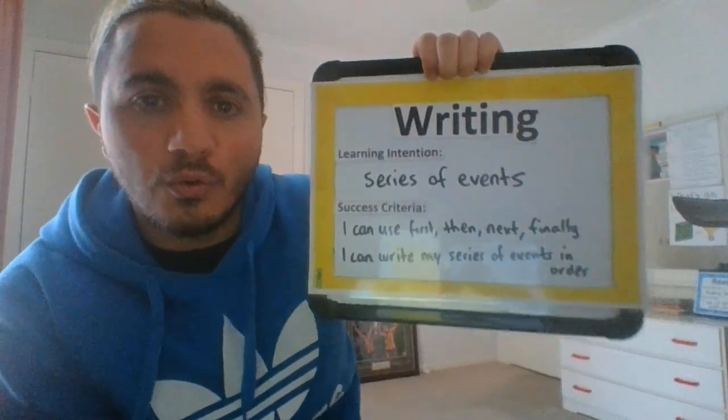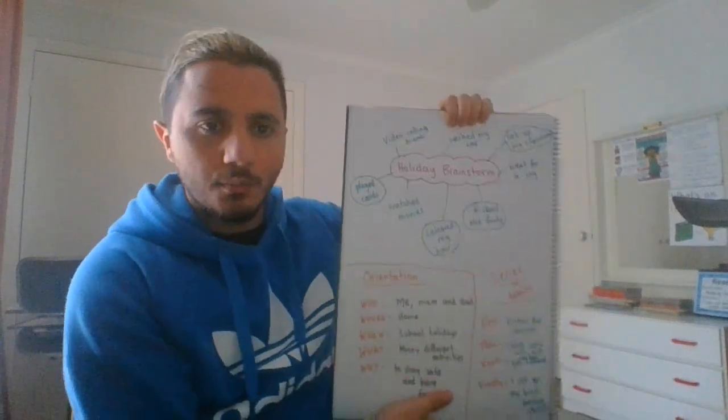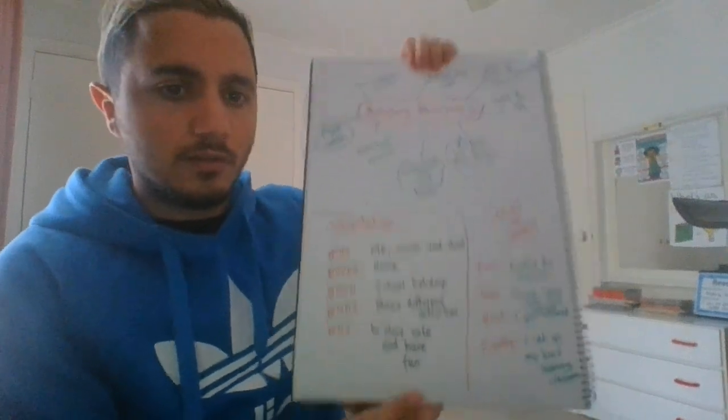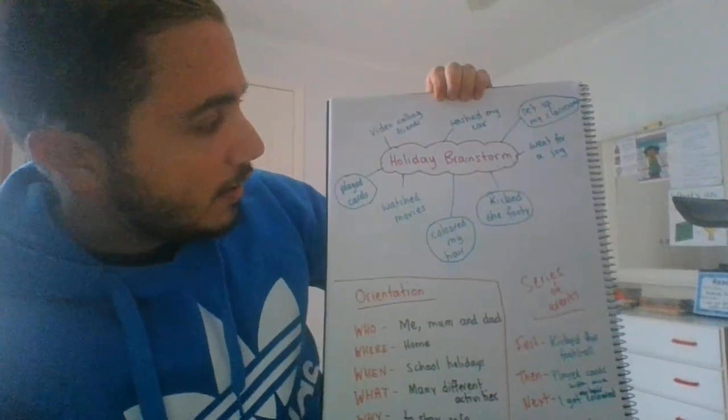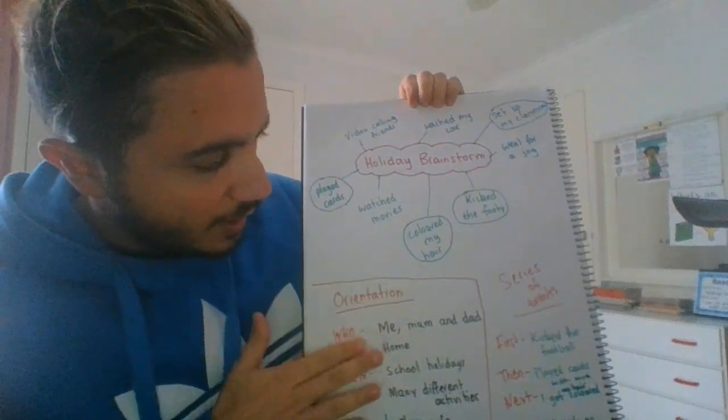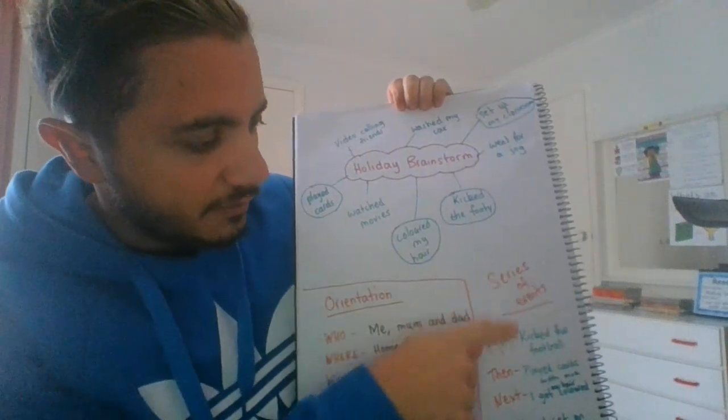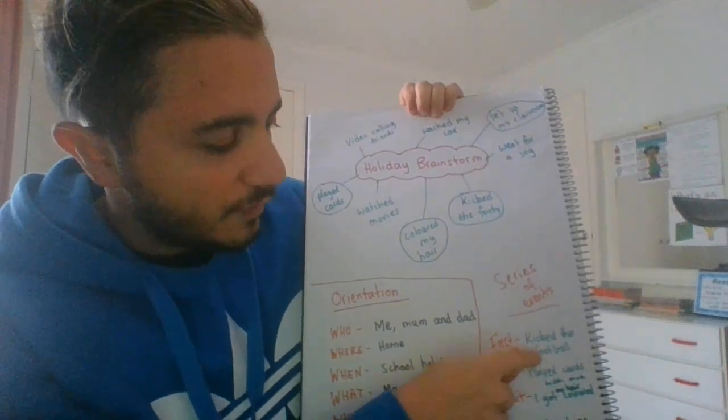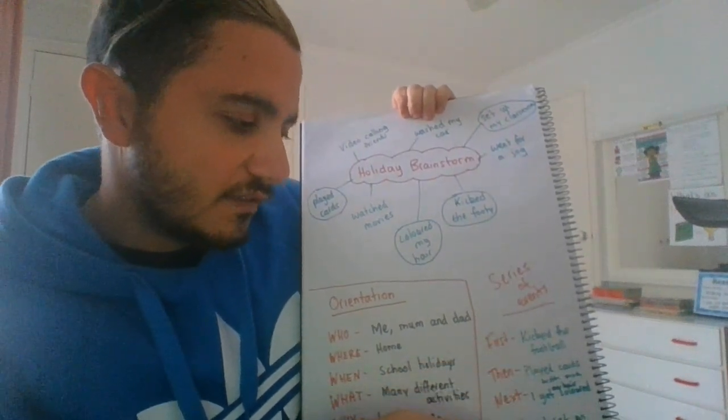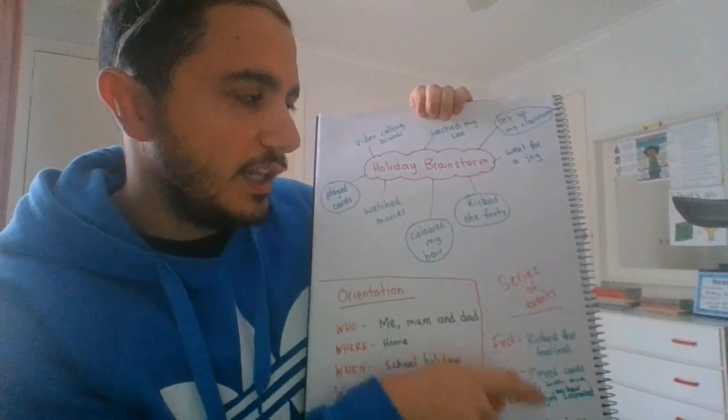Okay, so I'm going to go and just have a quick look back at my writer's notebook that we did on Monday. I'm looking at my ideas now. We've done our orientation. The next part is a series of events, so I'm going to use this information here. I've actually already put it into first, then, next, and finally, so that's going to help me a lot when I go back to my draft.